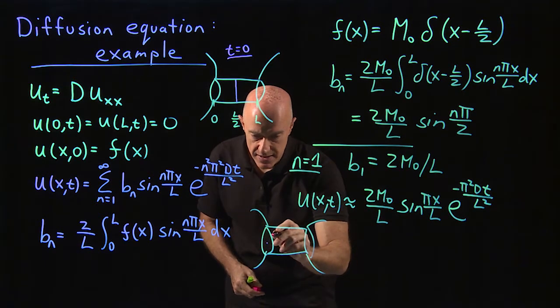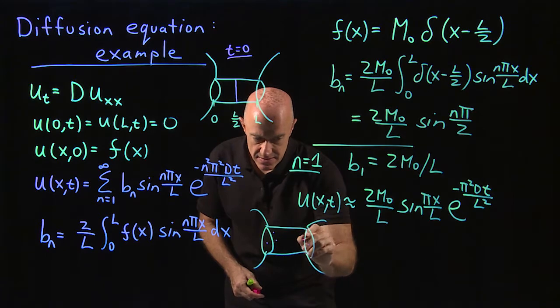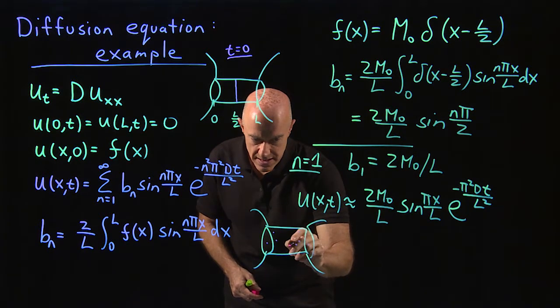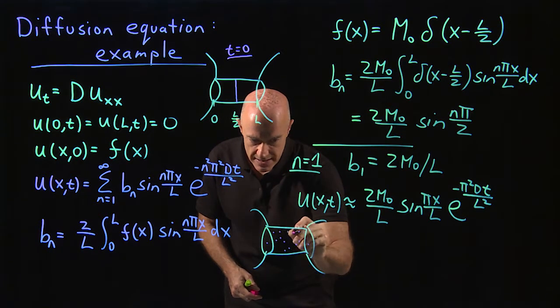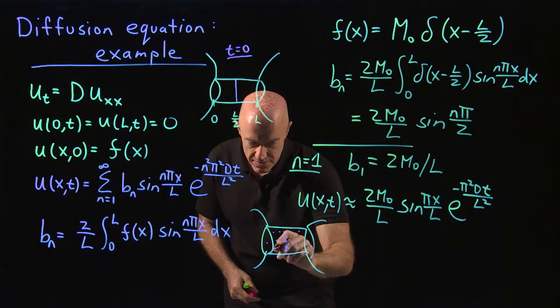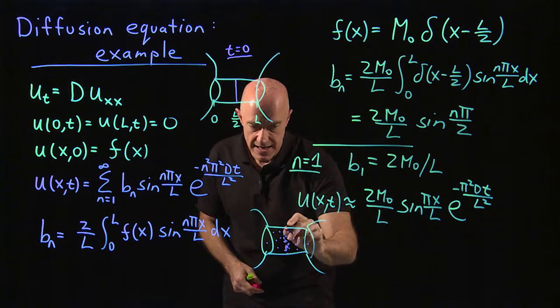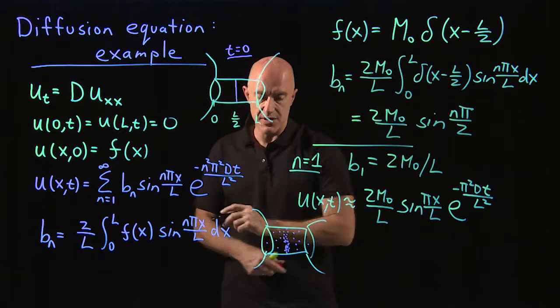So there's almost no dye at the ends. And then there's a lot more dye in the middle. Little dye at the end, a lot of dye in the middle.